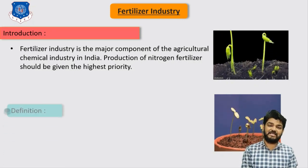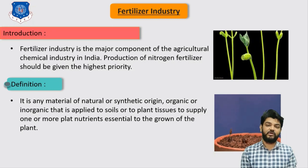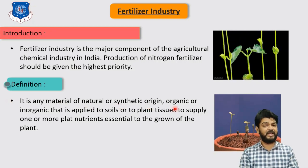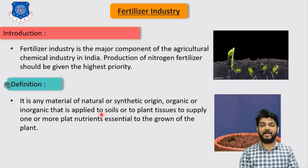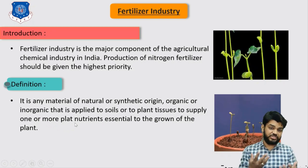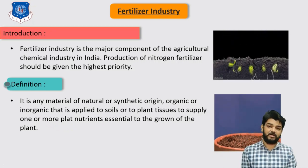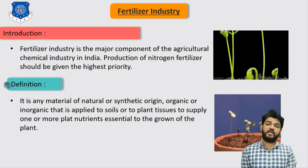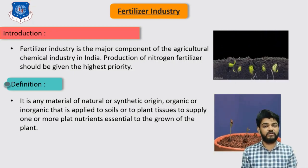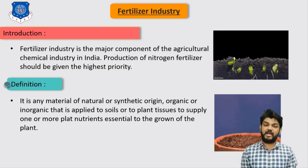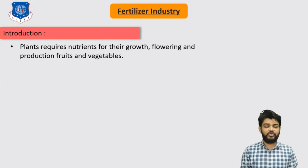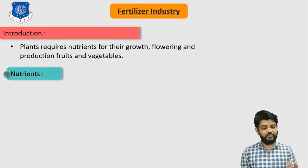The definition of a fertilizer is: it is any material of natural or synthetic origin — either organic or inorganic — that is applied to the soil or to plant tissue to supply one or more plant nutrients that help in the growing stage of the plant. In this chapter we are going to see different types of fertilizers and their production methods, as different plants require nutrition at different stages of their life.